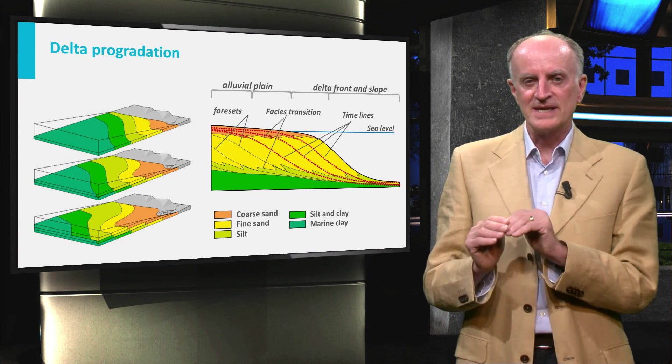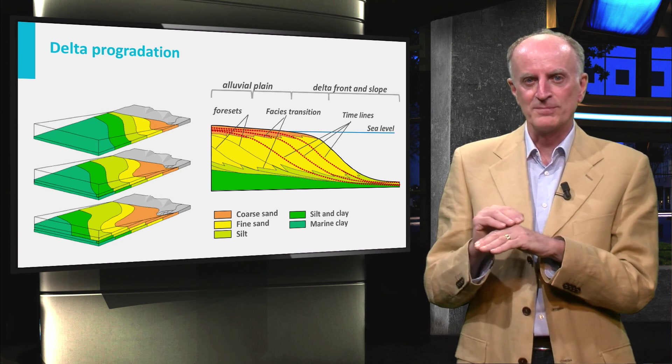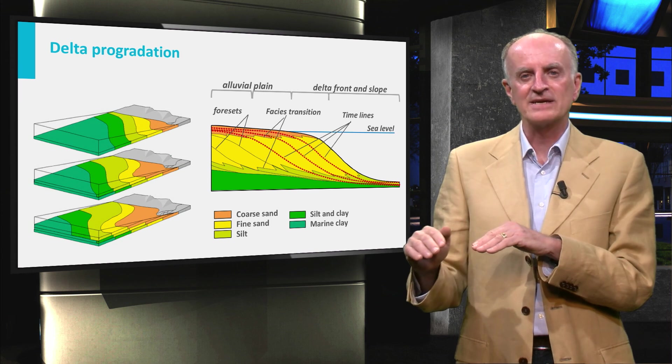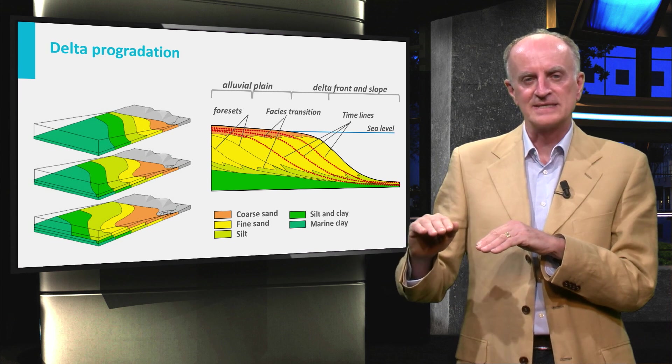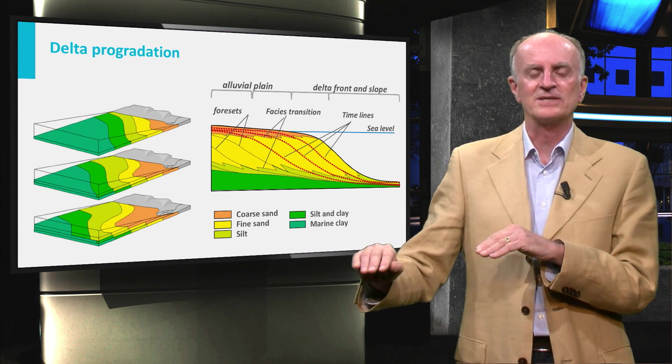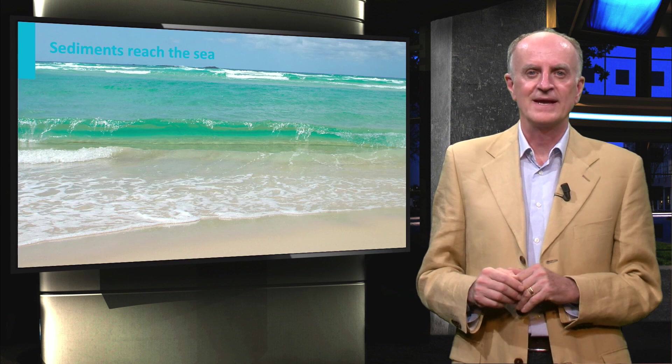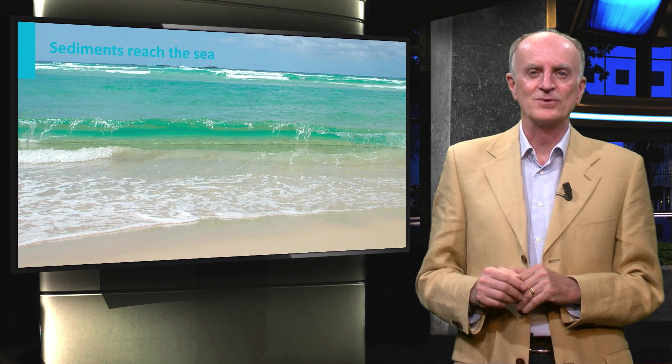At this stage, coarse-grained sediments are dropped at the delta top, sands are deposited in layers dipping towards the sea, and silts and shale are deposited at the toe of the foreset.